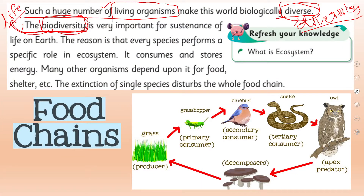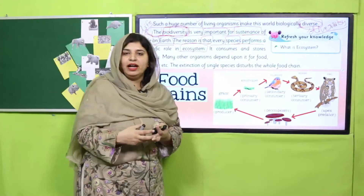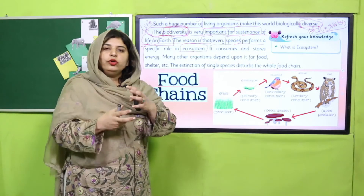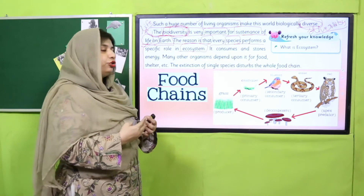The term bio means life and diversity means variation in life forms or living organisms. This biodiversity is very important — it sustains and maintains life on earth. The reason biodiversity is important is that every species performs a specific role. Every animal, plant, or microorganism performs a different role for the existence of life, which promotes, continues, and supports life.